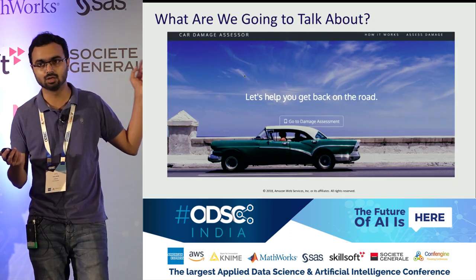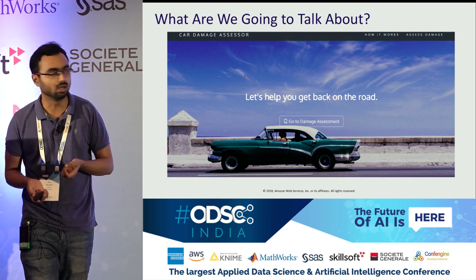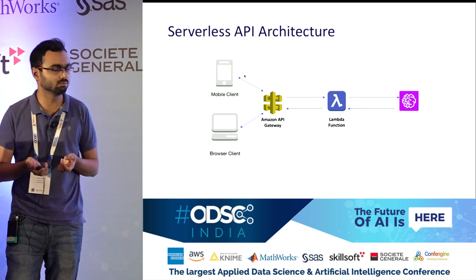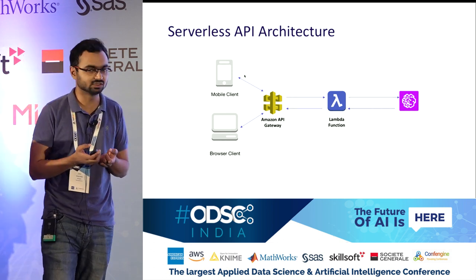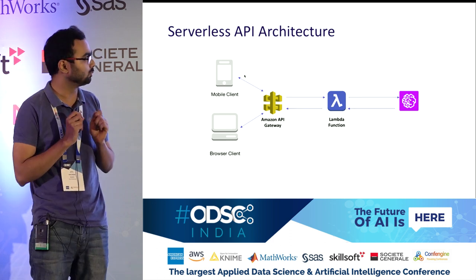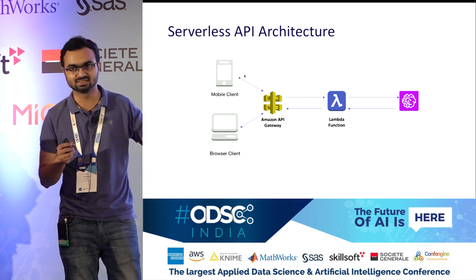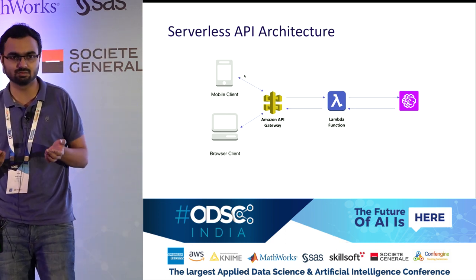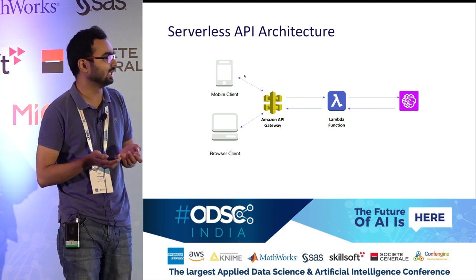There is a demo that is live — we'll give you the link at the end and you can try it yourself. At a very high level, the application sits behind an API gateway. Whenever you upload an image, it talks to a Lambda function, which then talks to SageMaker to figure out the results and returns the result.